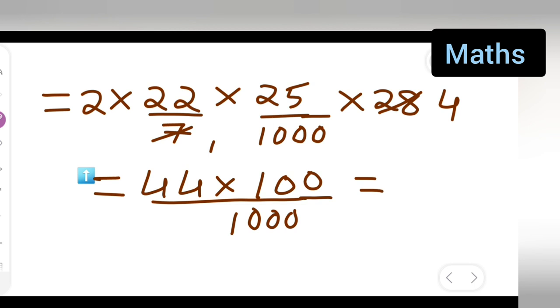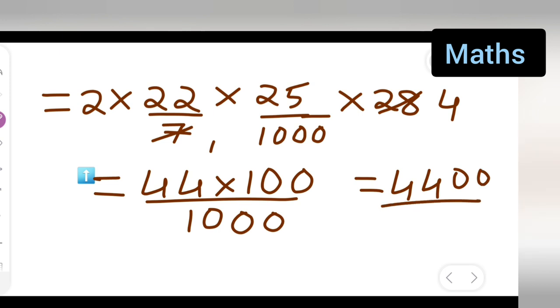Cancel the zeros. You can directly cancel two zeros from numerator and denominator. 4400/1000 = 4.4 meter square.